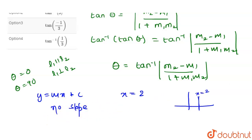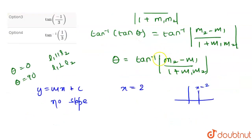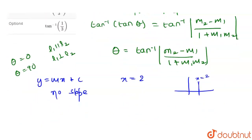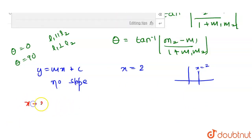When there is no slope for the first line, this formula will not be valid. To find θ using this formula, we need slopes of both lines, but here we only have the slope of the second line, not the first. So we will find the slope of the second equation: x - 3y = 6.